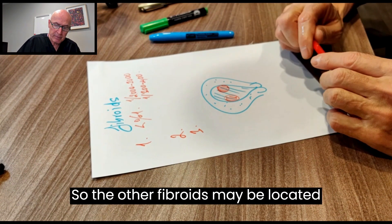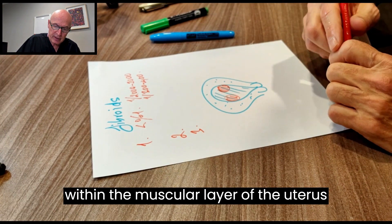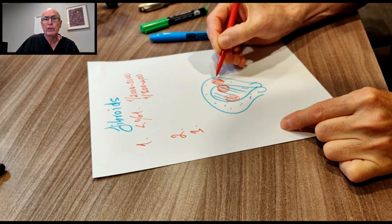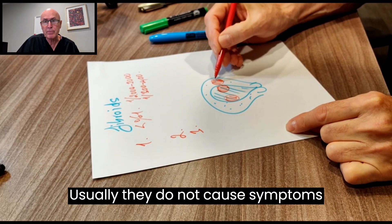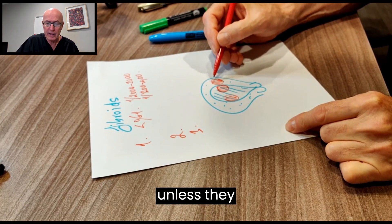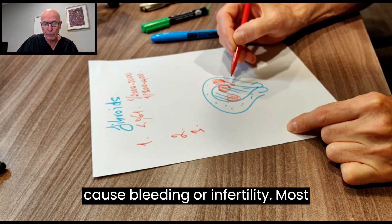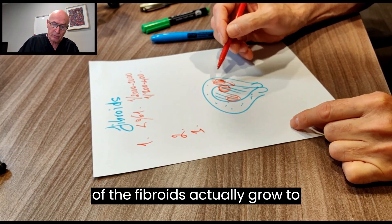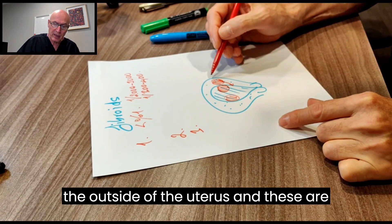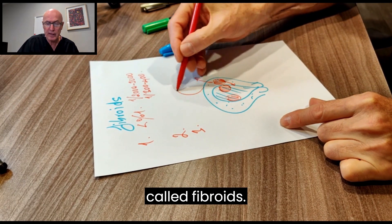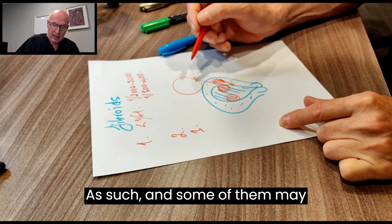Other fibroids may be located within the muscular layer of the uterus. These are called intramural fibroids. Usually they do not cause symptoms unless they hinge on the endometrium, and then they may cause bleeding or infertility. Most fibroids actually grow to the outside of the uterus, and these are called subserosal fibroids.